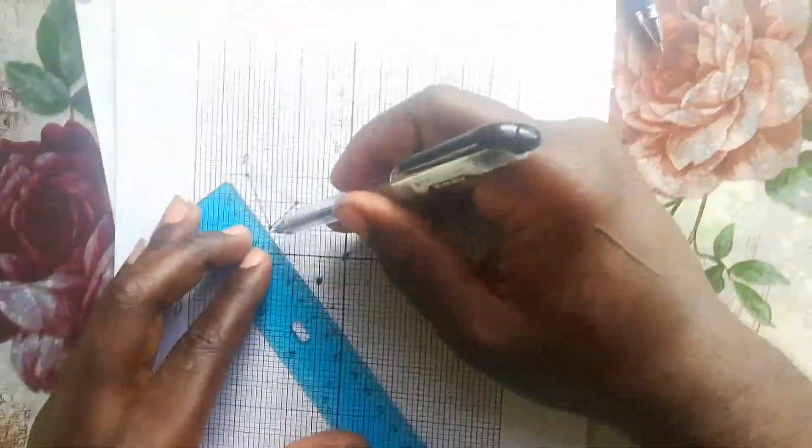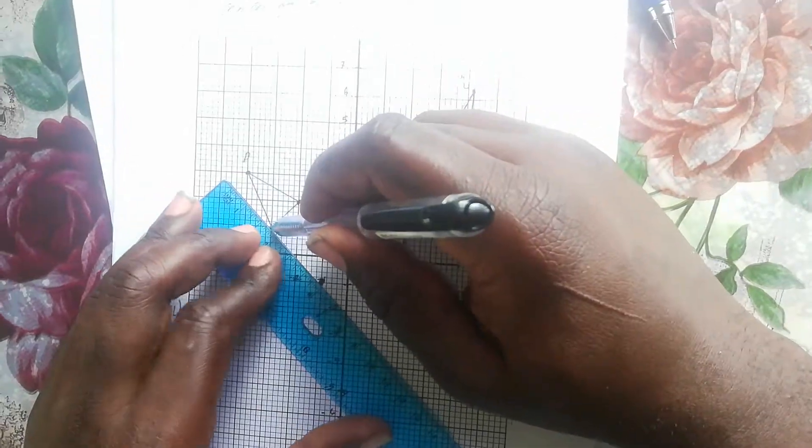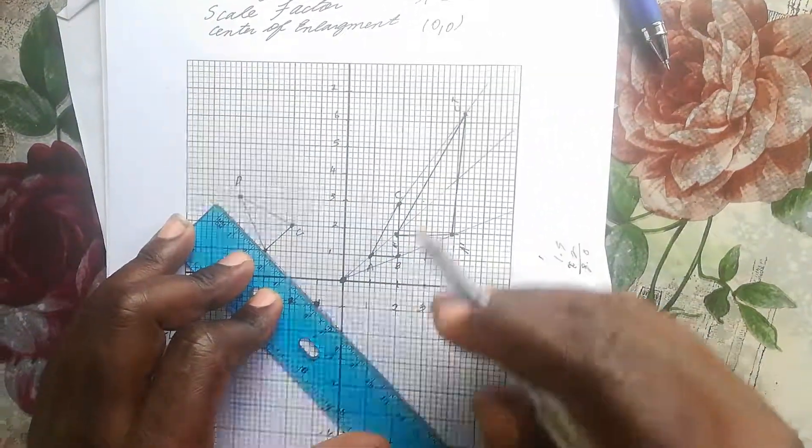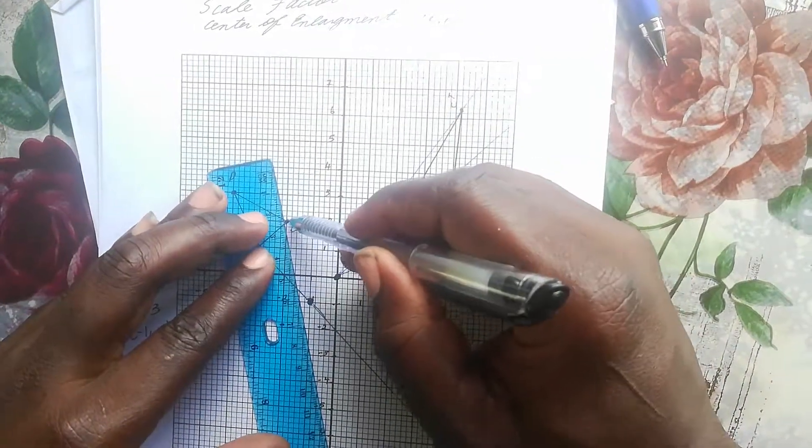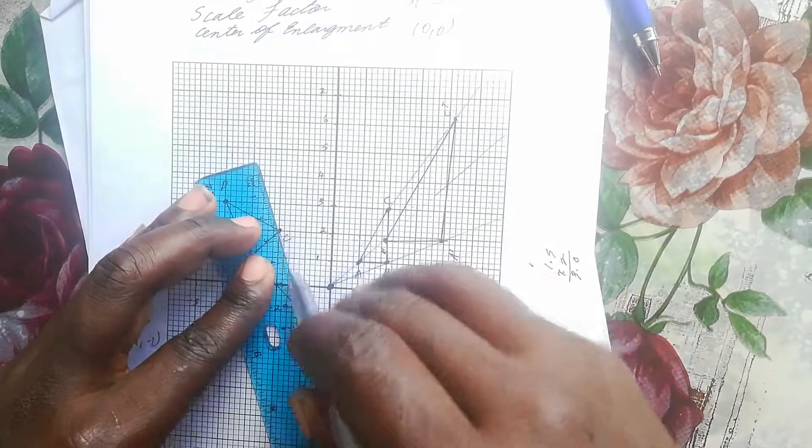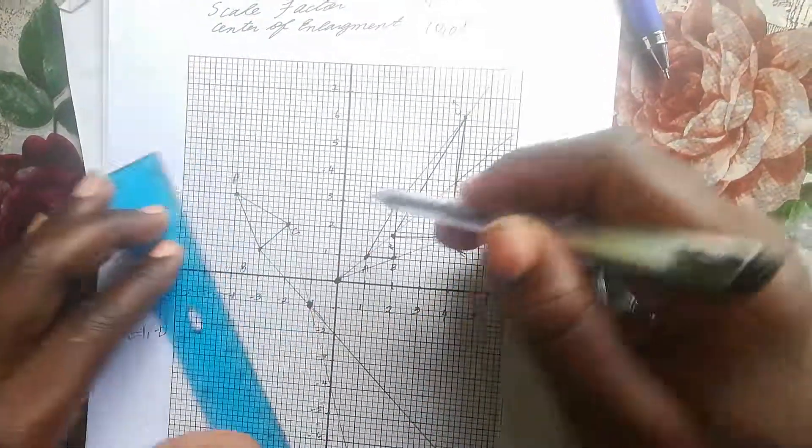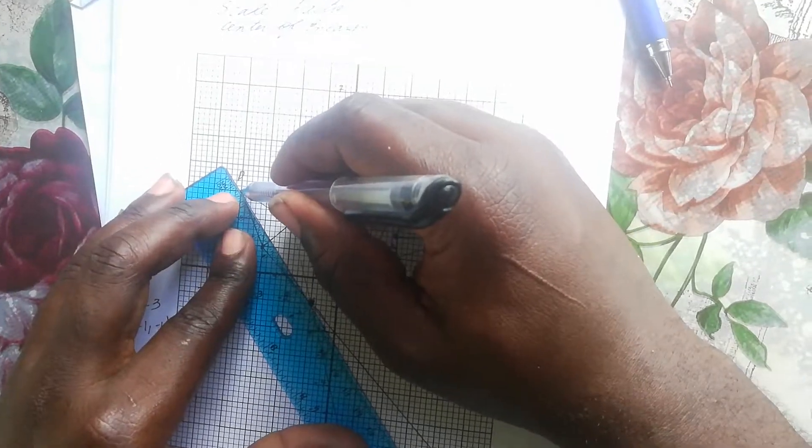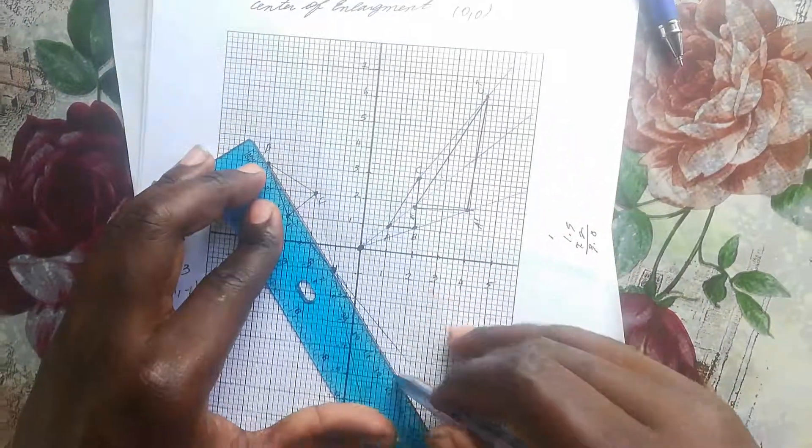We're going to draw lines from these vertices through our center - from C through our center, and from D through our center.